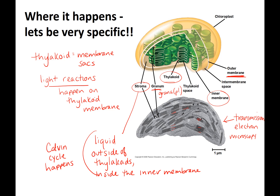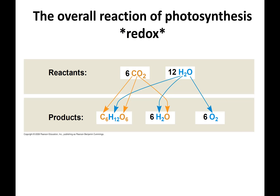In the thylakoid lumen, we produce a proton gradient — just like in cellular respiration — that allows the cell to make ATP via photosynthesis. The overall reaction of photosynthesis: the reactants are CO2 and water, and we have to put in energy from the sun or other light sources. It's pretty amazing that all plants need, for the most part, is carbon dioxide, water, and sunlight.